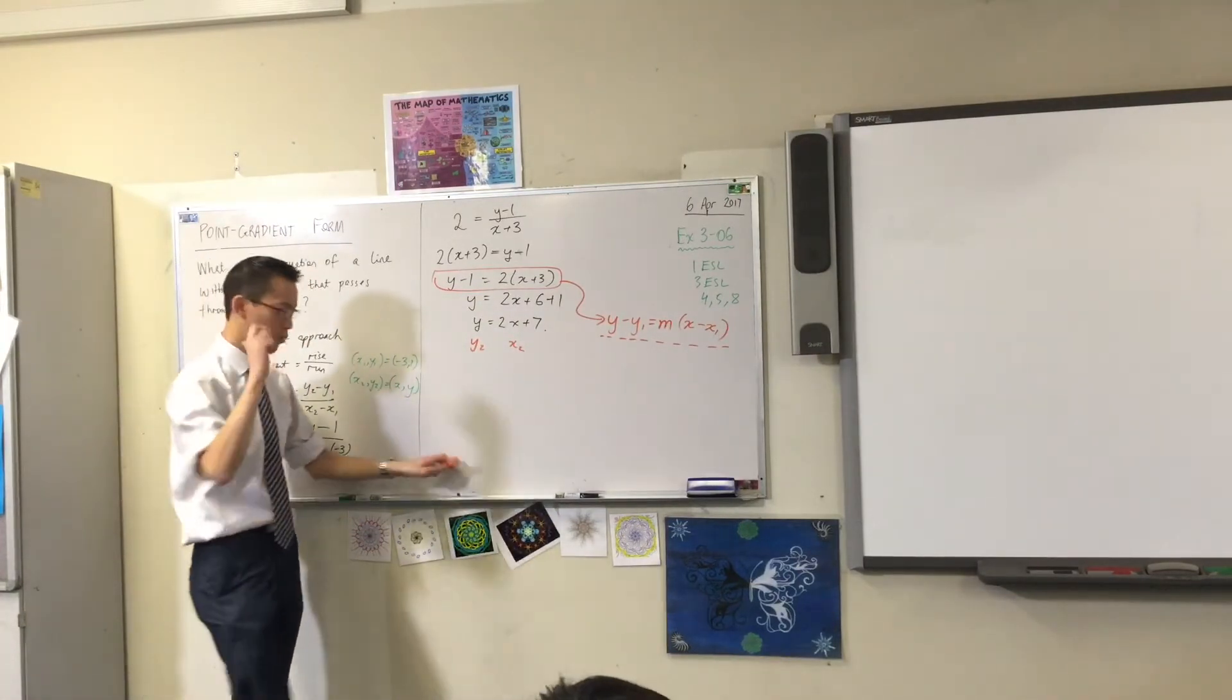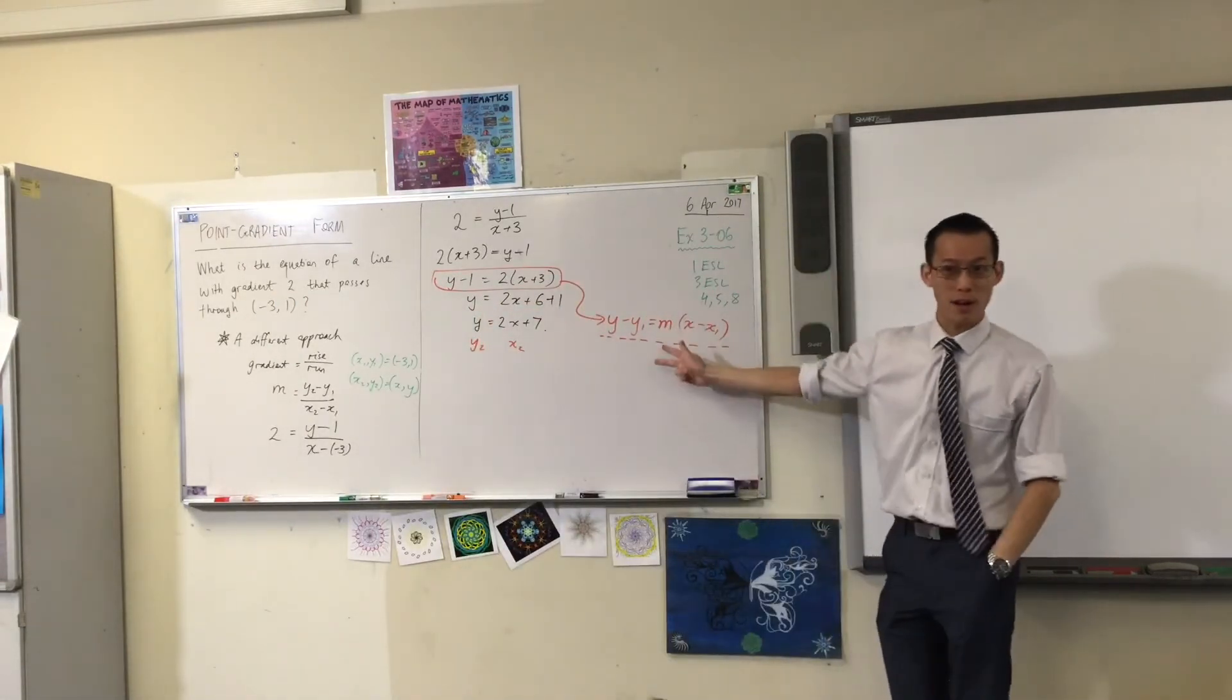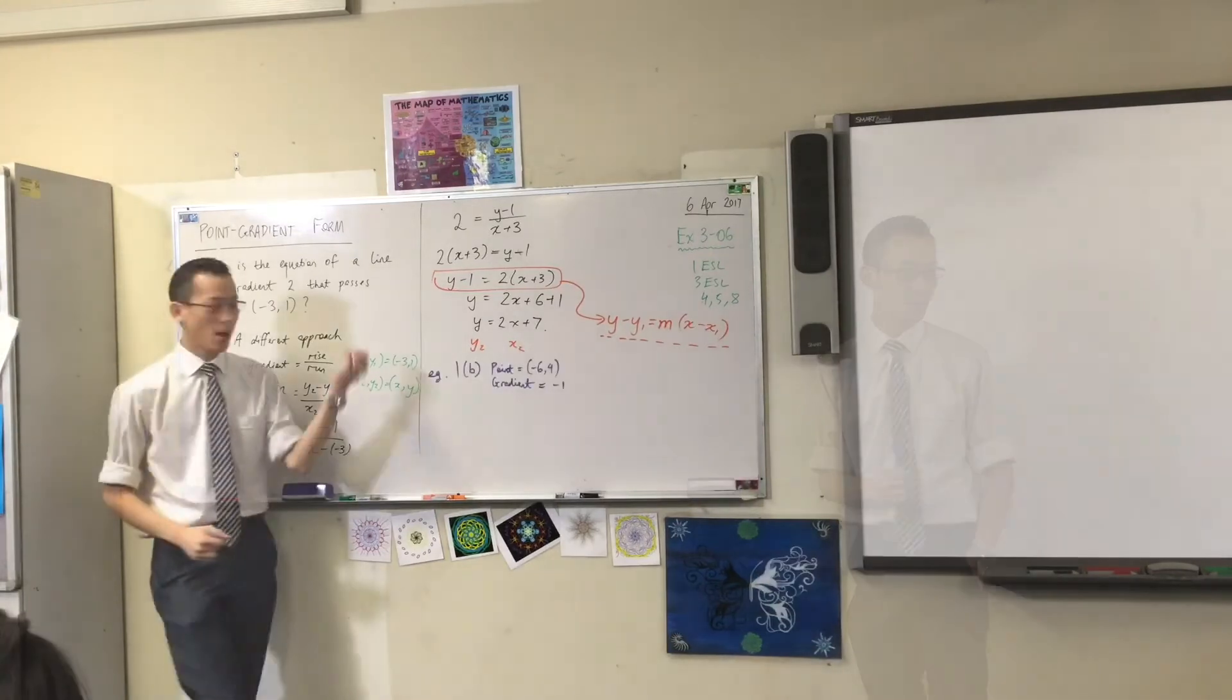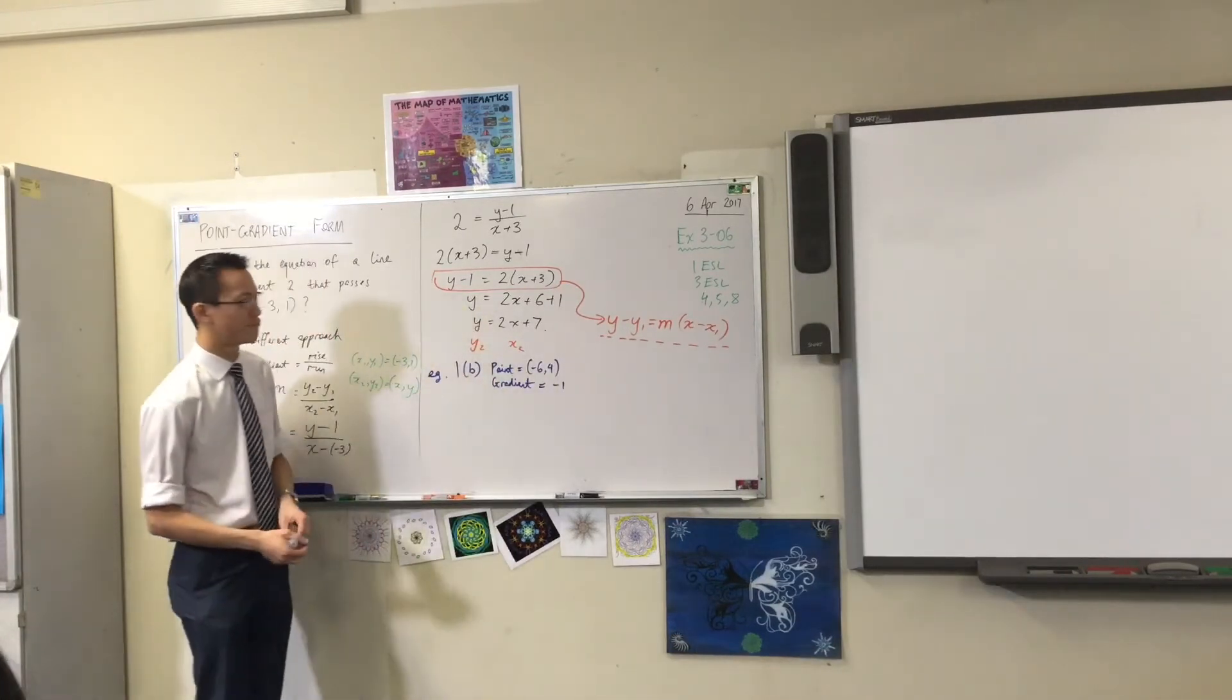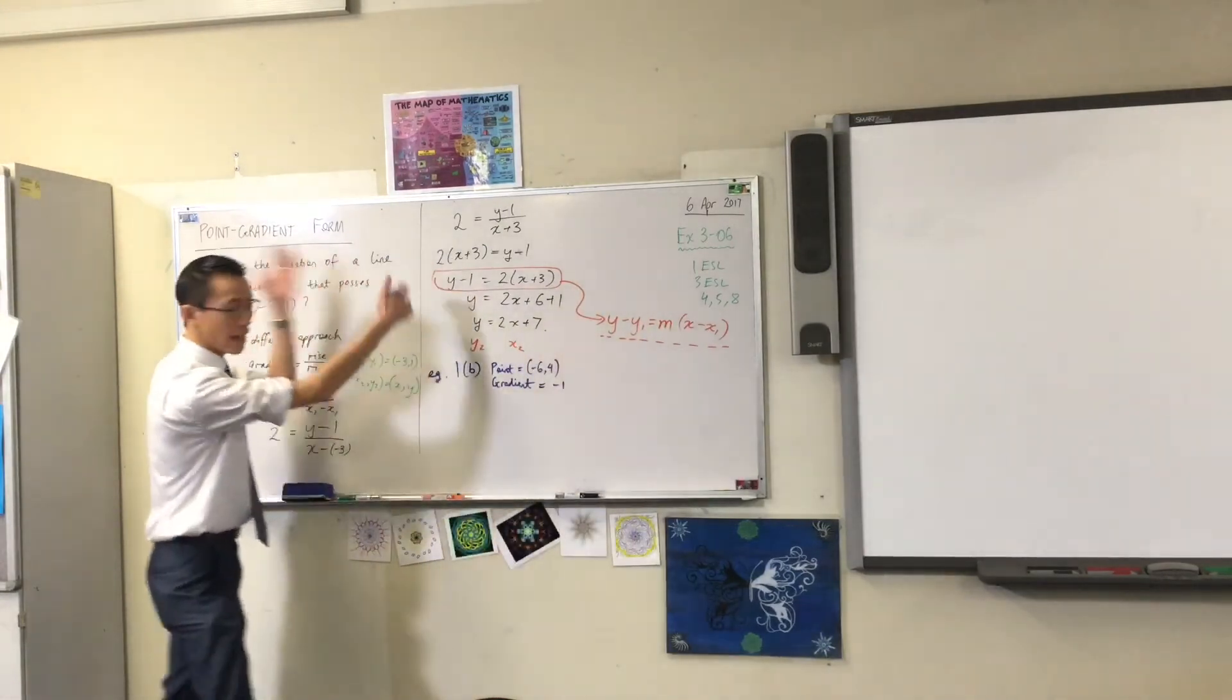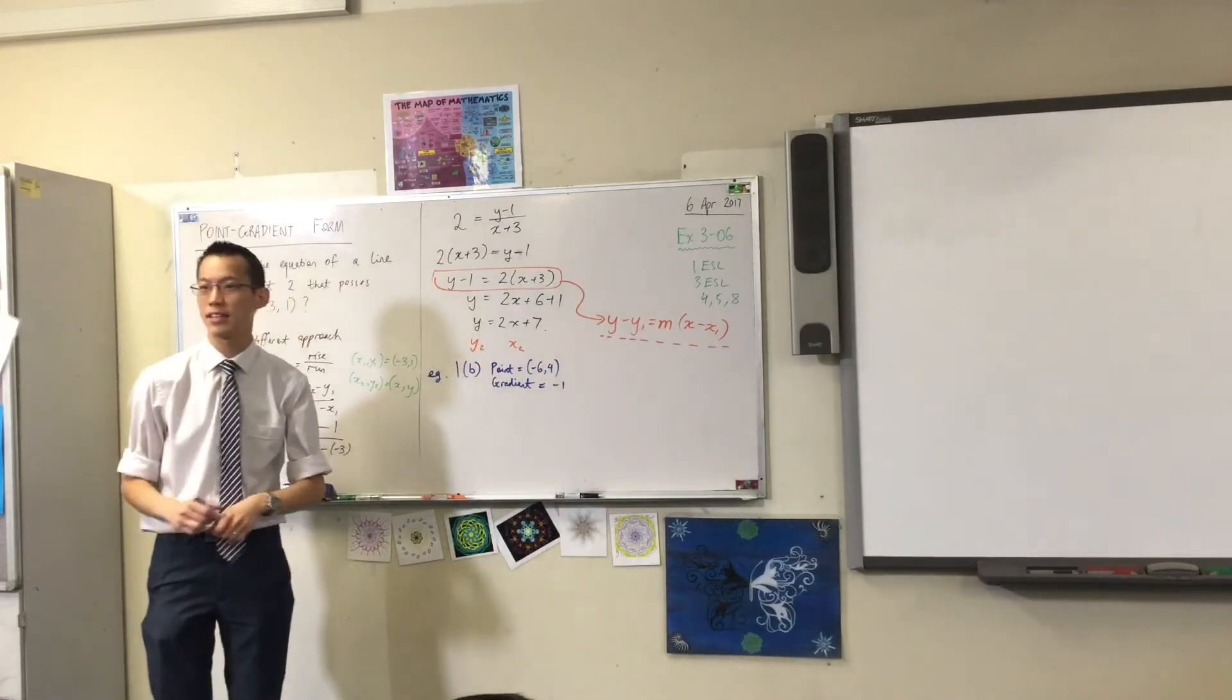So, this saves us a lot of work. We've got general form now. We've got gradient intercept form. Now I've got point gradient form, where if you've got this different set of information, you can go there straight away. And look, it takes one, two, three lines. If you're supplied with a point and a gradient, you can just point gradient form. Now that you see it and you recognise it. You can quote this, this thing here. You don't need to prove it like we just did.